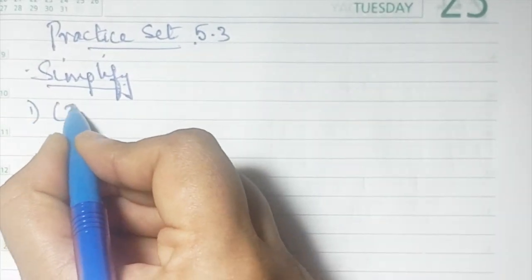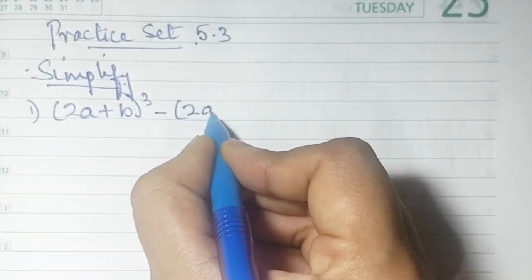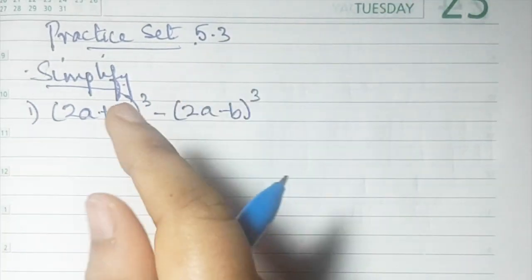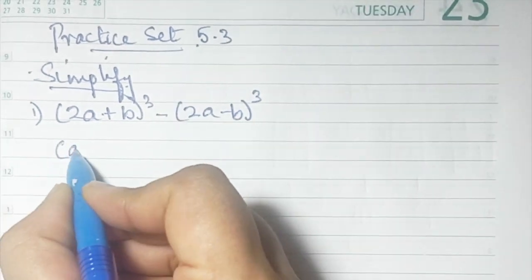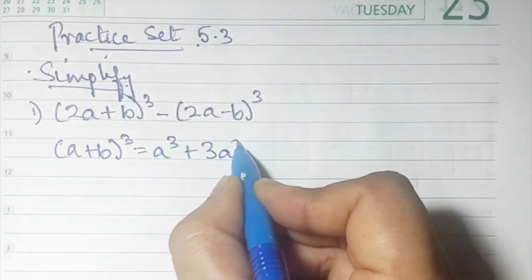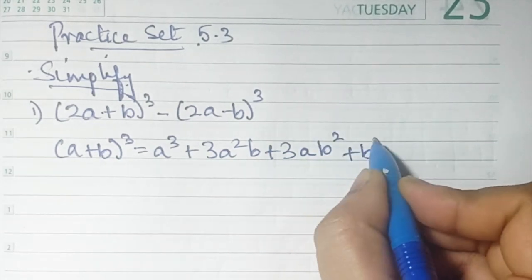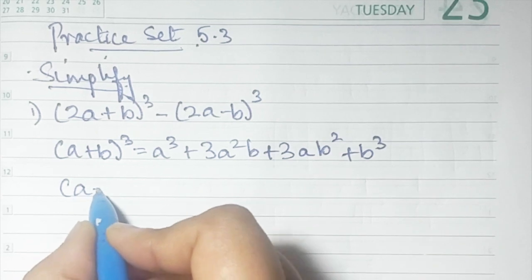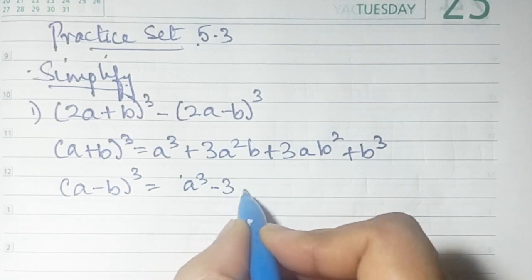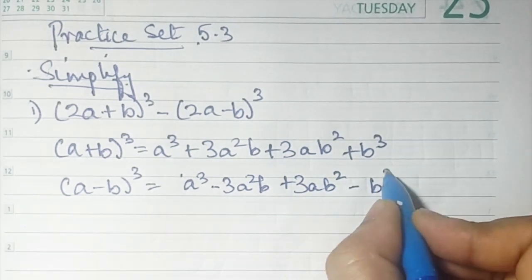The first sum says: (2a + b) whole cube minus (2a - b) whole cube. Here you have positive and negative formulas, so you're going to use both formulas. That is, (a + b)³ = a³ + 3a²b + 3ab² + b³, and (a - b)³ = a³ - 3a²b + 3ab² - b³.